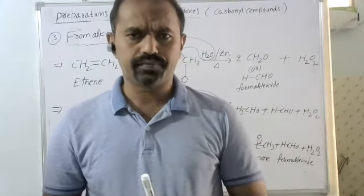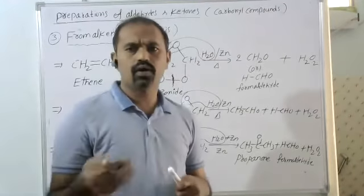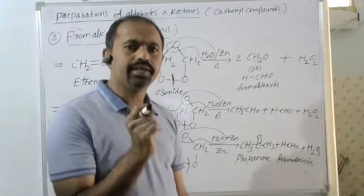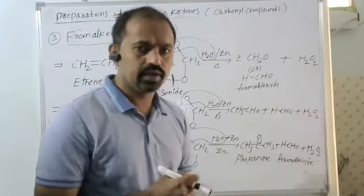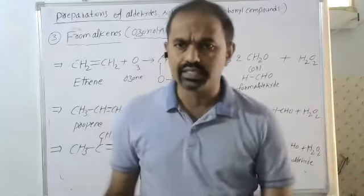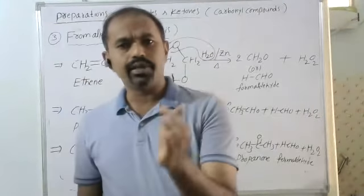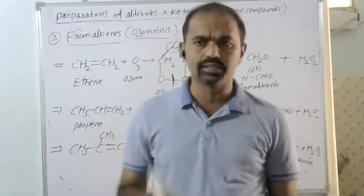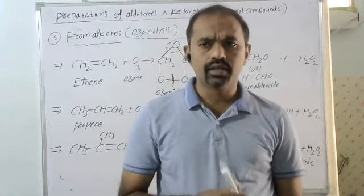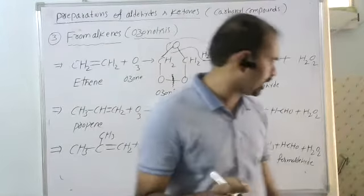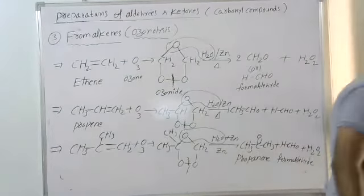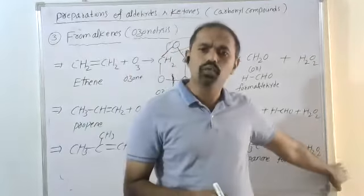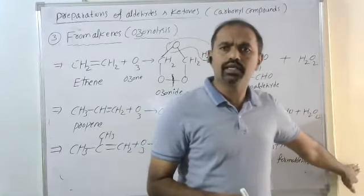Second one: aldehydes and ketones are obtained from geminal dihalides based on the hydrolysis process. If you take terminal gem-dihalides and hydrolyze them, we get the corresponding aldehydes. Otherwise, if you take non-terminal gem-dihalides and hydrolyze them, we get the corresponding ketones.